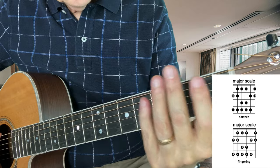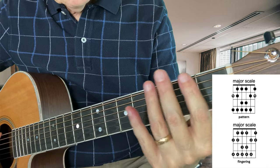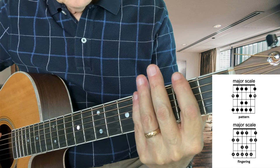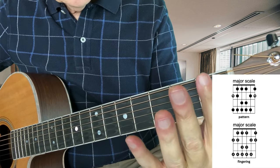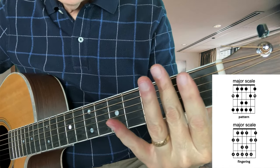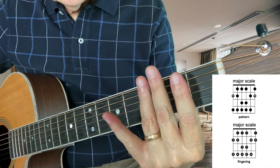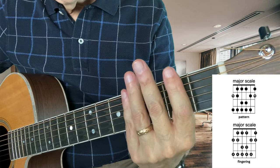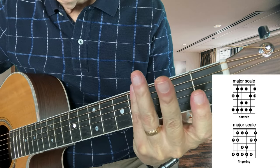So we have two things. We have a pattern we want to memorize and then we have fingerings we want to keep organized as well. Very simply, my first finger maps to the first fret. My second finger maps to the second fret. Third finger maps to the third fret. And fourth finger maps to the fourth fret.